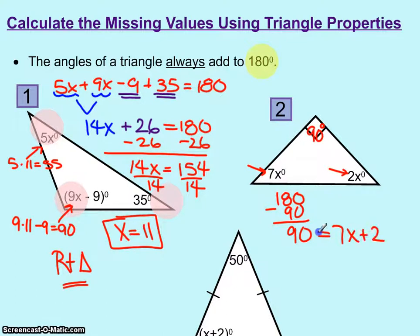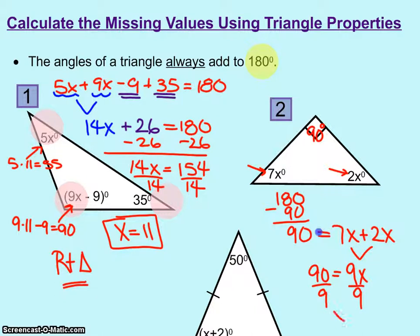7x plus 2x equals 90. Adding the 7 and the 2, we have 9x equals 90. Dividing by 9, we get x equals 10.